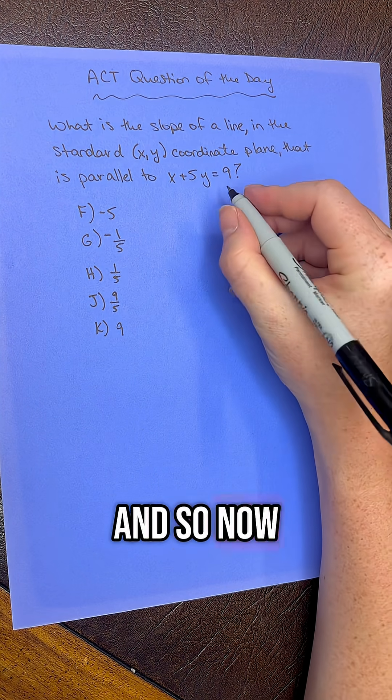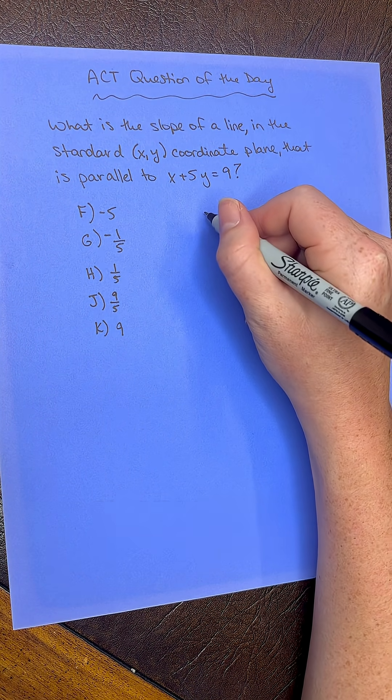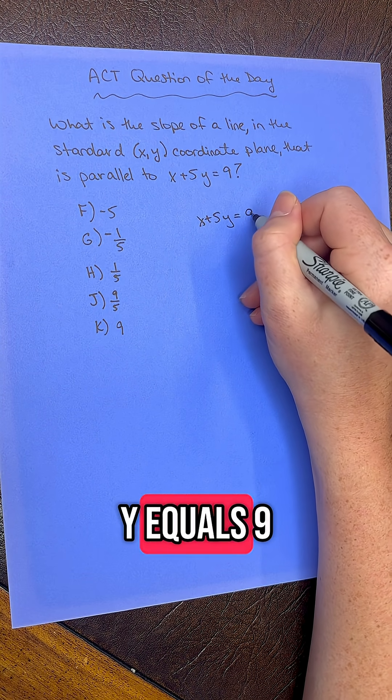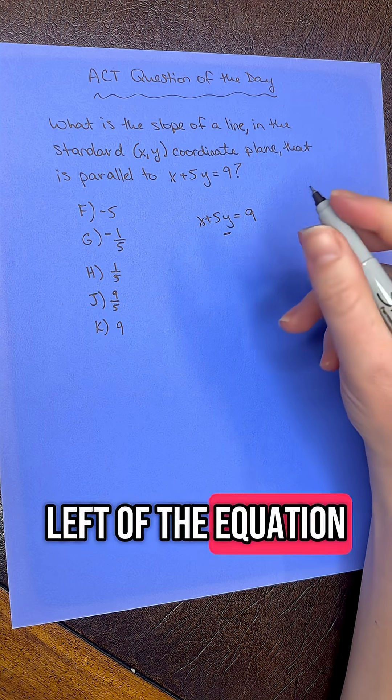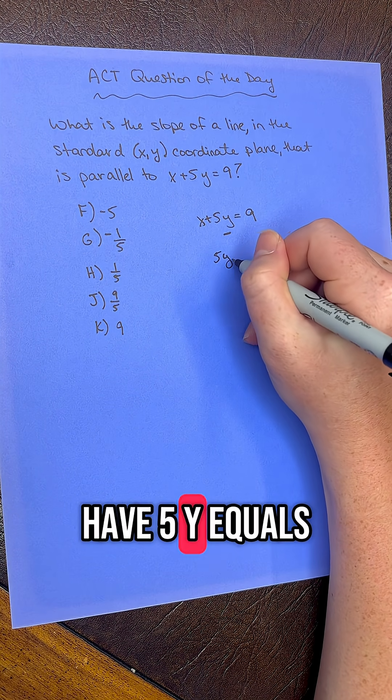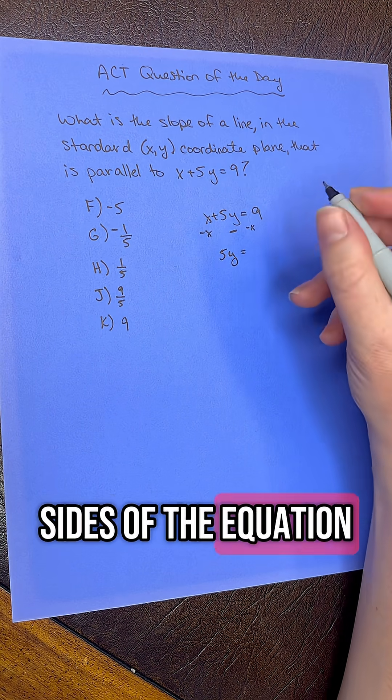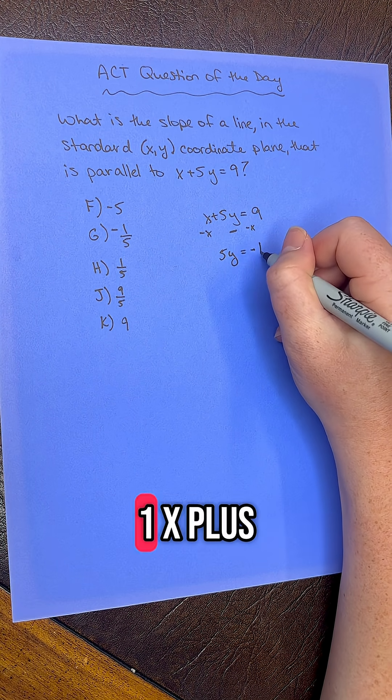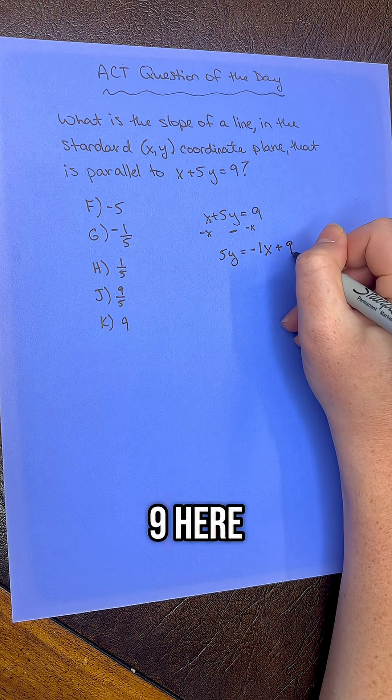Now we need to get it into y equals mx plus b form. So we have x plus 5y equals 9. We want to get the y term alone on the left of the equation, so we have 5y equals, we're going to subtract x from both sides of the equation, so equals negative 1x plus 9 here.